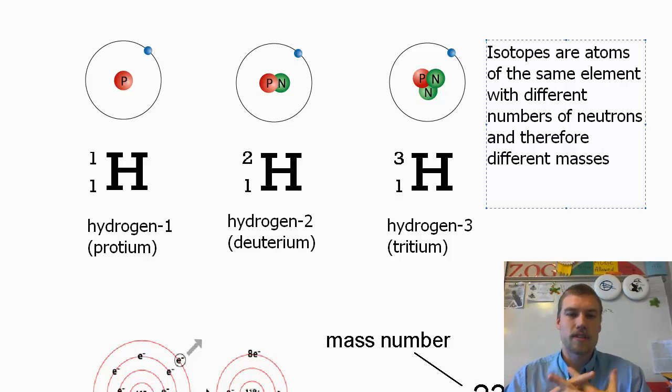So isotopes are atoms of the same element, different numbers of neutrons, and because of that they're going to have different masses. Let's take a look at some examples.